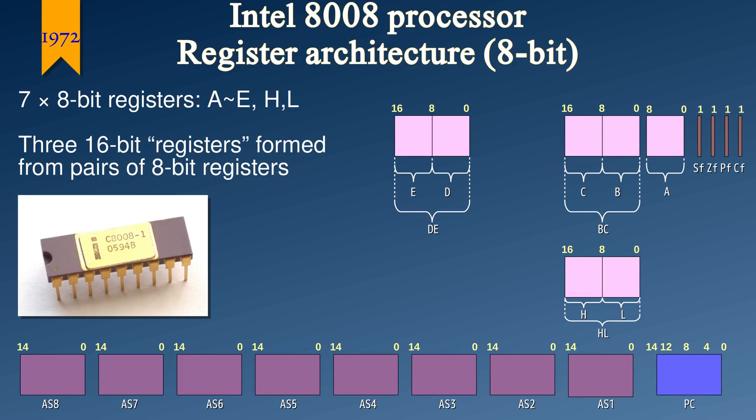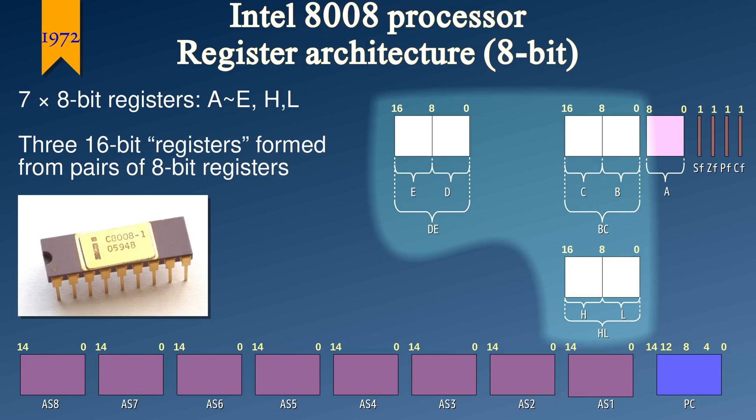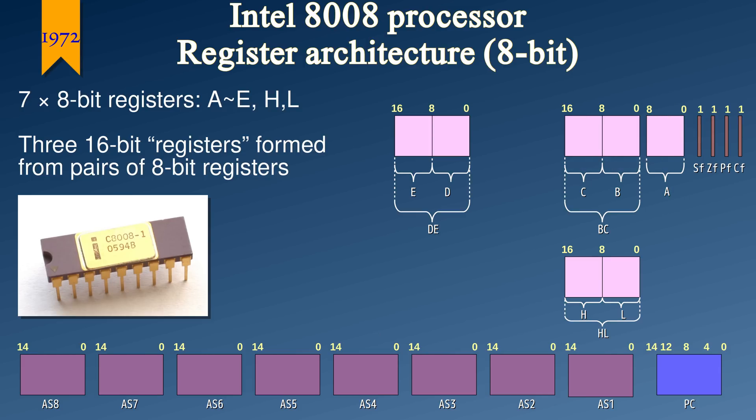One year later, they released the 8008 microprocessor. The 4004 was a 4-bit microprocessor, and the 8008 was an 8-bit microprocessor. In this processor, they still had a dedicated accumulator called A, and also six other registers. All of these registers were 8 bits wide, but the six other registers could be paired to form 16-bit units called BC, DE, and HL.